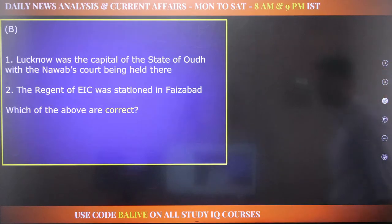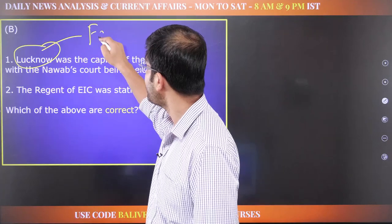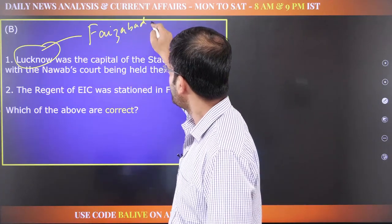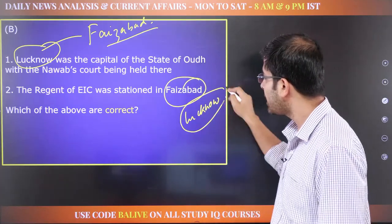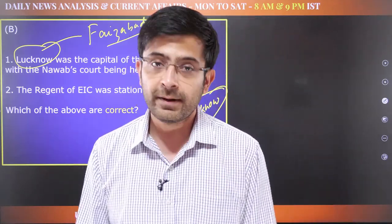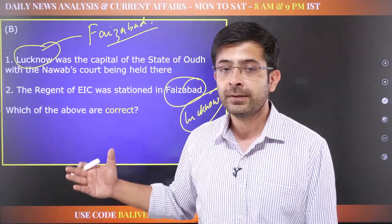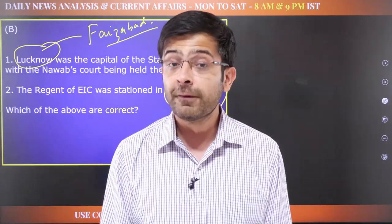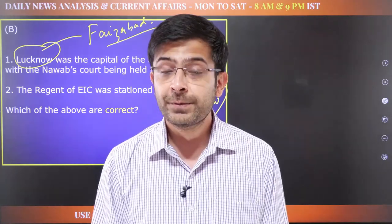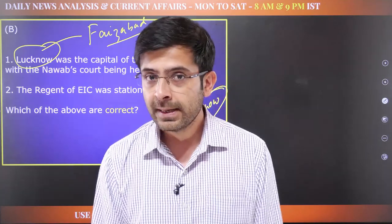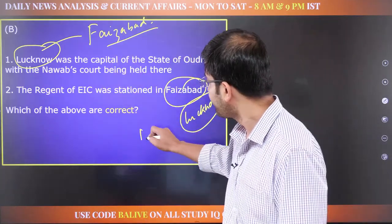For the next question: Lucknow was the capital of the state of Awadh. Unfortunately, Lucknow was not the capital — it was Faizabad which was the capital. The regent was in Lucknow. If you look at the architecture of Lucknow, it is inspired by Victorian architecture, which tells you the English came and settled there. The regent handling state affairs of Awadh on behalf of the company was stationed in Lucknow, whereas the Nawab would be in Faizabad. Both statements are incorrect.